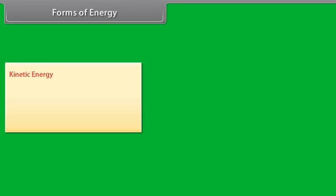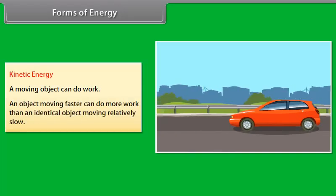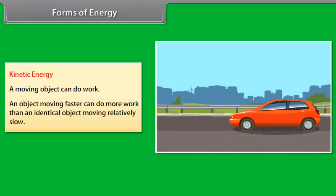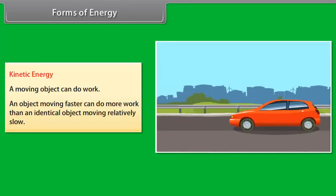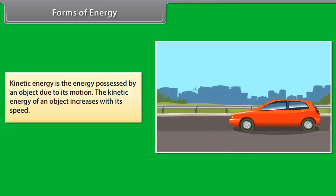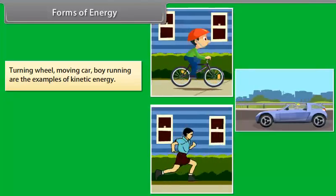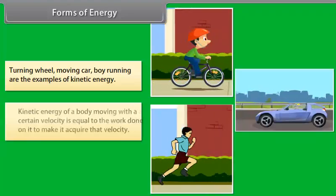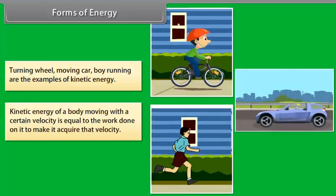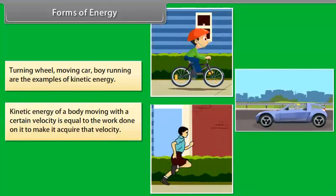Let us first study about kinetic energy. We know that a moving object can do work, and an object moving faster can do more work than an identical object moving relatively slowly. Kinetic energy is the energy possessed by an object due to its motion. The kinetic energy of an object increases with its speed. A turning wheel, a moving car, and a boy running are examples of kinetic energy. The kinetic energy of a body moving with a certain velocity is equal to the work done on it to make it acquire that velocity.